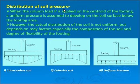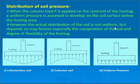Distribution of soil pressure — to understand how the pressure acts on the footing: when the column load P is applied at the center of the footing, a uniform pressure is assumed to develop on the soil surface below the footing area, which is the ideal condition. However, the actual distribution of soil pressure is not uniform but depends on many factors, especially the composition of the soil and the degree of flexibility of the footing.